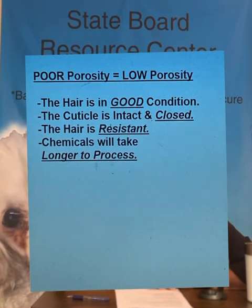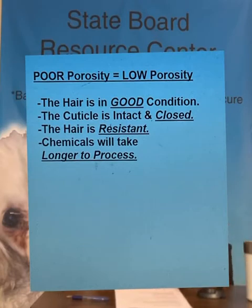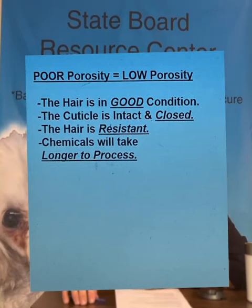Slide number one shows you: poor porosity equals low porosity. The hair is in good condition. The cuticle is intact and closed tightly. Because the cuticle is closed, the hair tends to be resistant. Because the hair is resistant, it's difficult for moisture or chemicals to penetrate past the cuticle, so processing will take longer. I would strongly suggest stopping the video right here, getting out your paper, and writing this down — there is guaranteed to be a question on poor or low porosity.